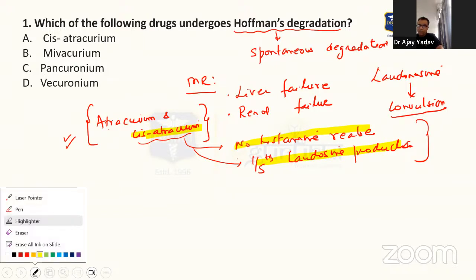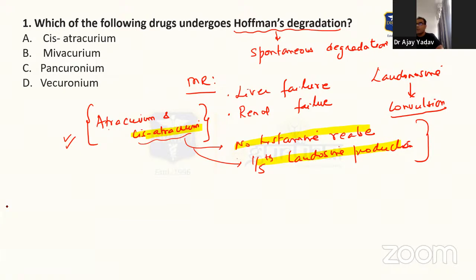And anesthetic properties of both are similar. That means both are metabolized by Hoffman degradation. Duration of action is also same. So in this question they have asked which one undergoes Hoffman degradation. So of course it is cisatracurium. So very straightforward question.